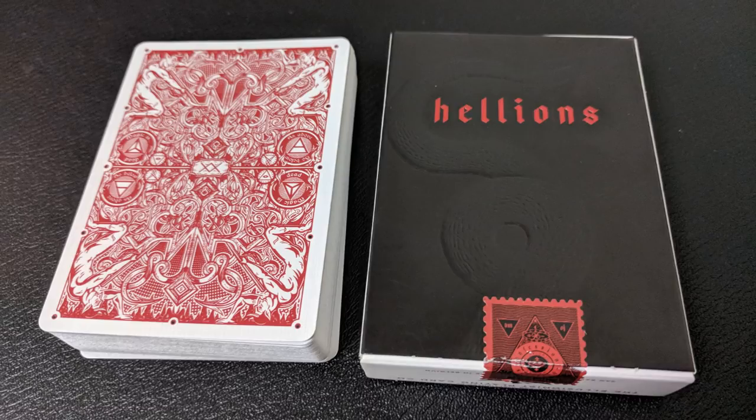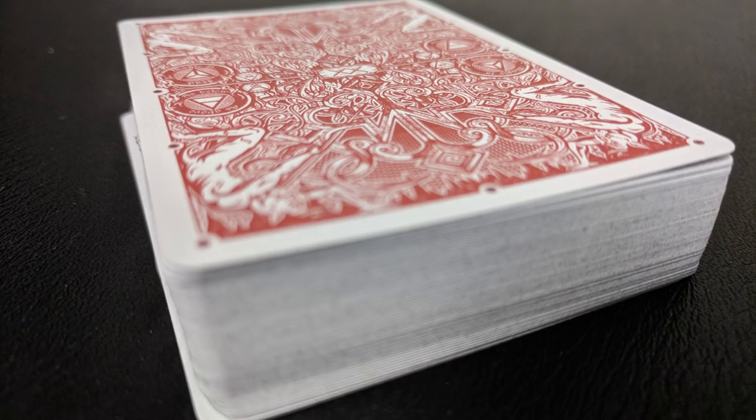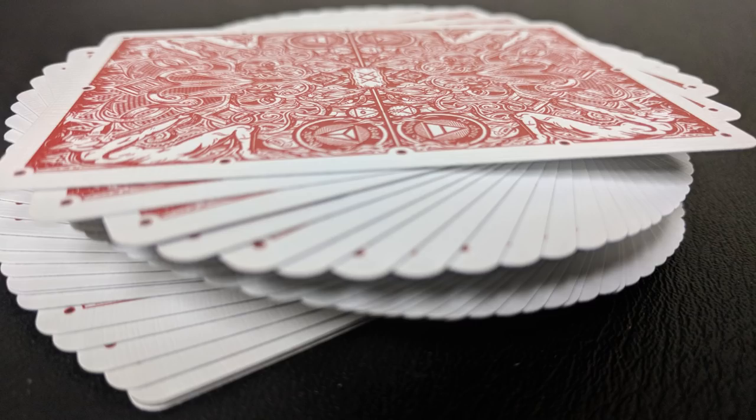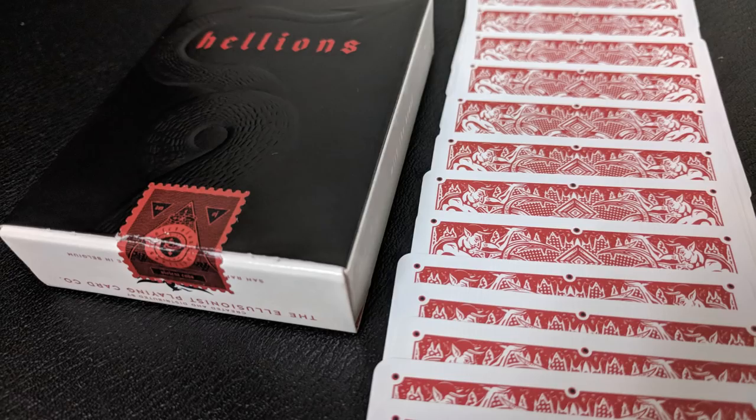The back design is a homage, a tribute to the David Blaine Gatorbacks. David's deck is a bunch of alligator symbols. And this one is devils. And a Hellion is just really a rowdy kid. You have a rowdy kid or some uncontrollable teenager and you'd call them a Hellion.